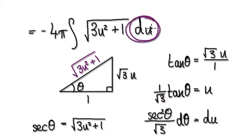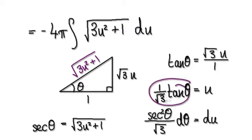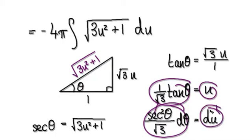Now we want the u here. From here, differentiate both sides. That will then give you du = (sec²θ/√3) dθ.